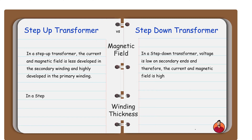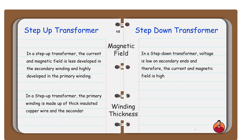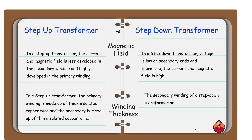In a step up transformer the primary winding is made up of thick insulated copper wire and the secondary is made up of thin insulated copper wire. The secondary winding of a step down transformer are made of thicker wire because the output current is high, while the primary is made of thinner copper wire.